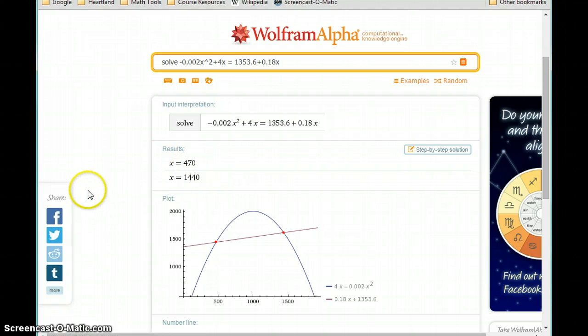So what Wolfram Alpha will output for us are those two results, the two X values that solve our system, as well as the graph showing those points of intersection, which are in fact those two solutions. So we get our revenue function in blue, this parabola, and we get our cost function in red, the linear function, and then we get our two values 470 and 1440.